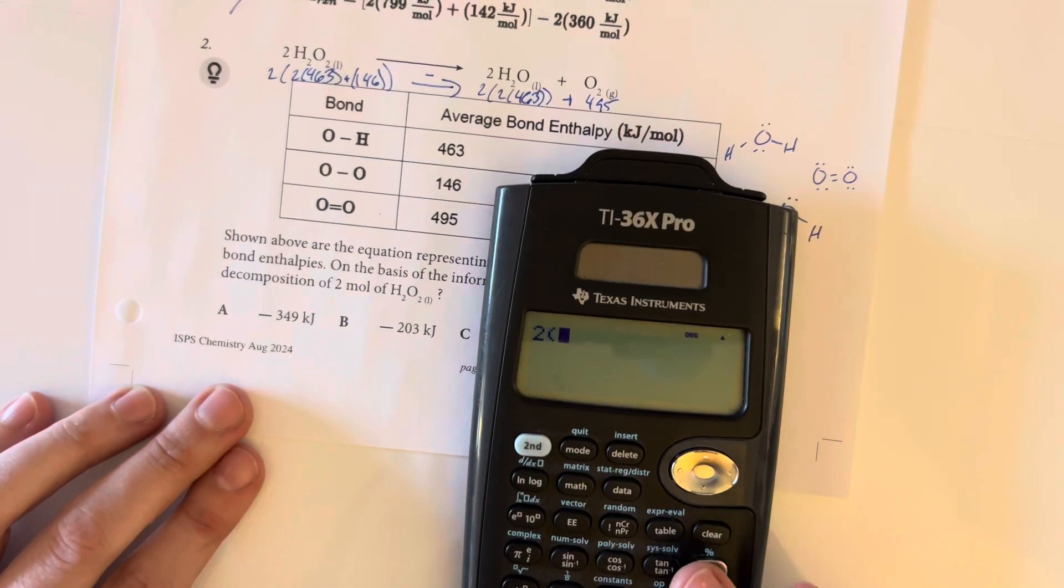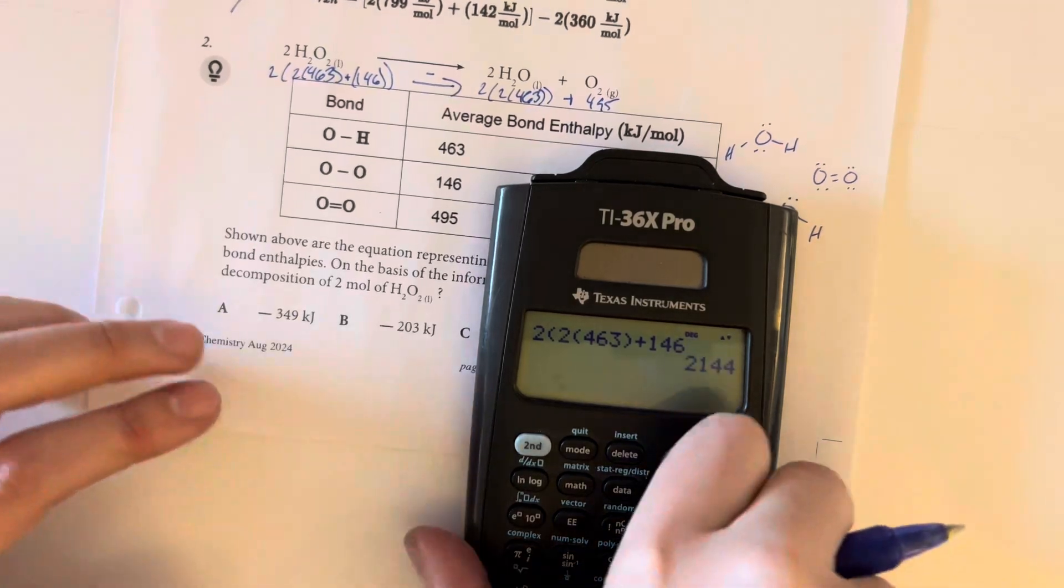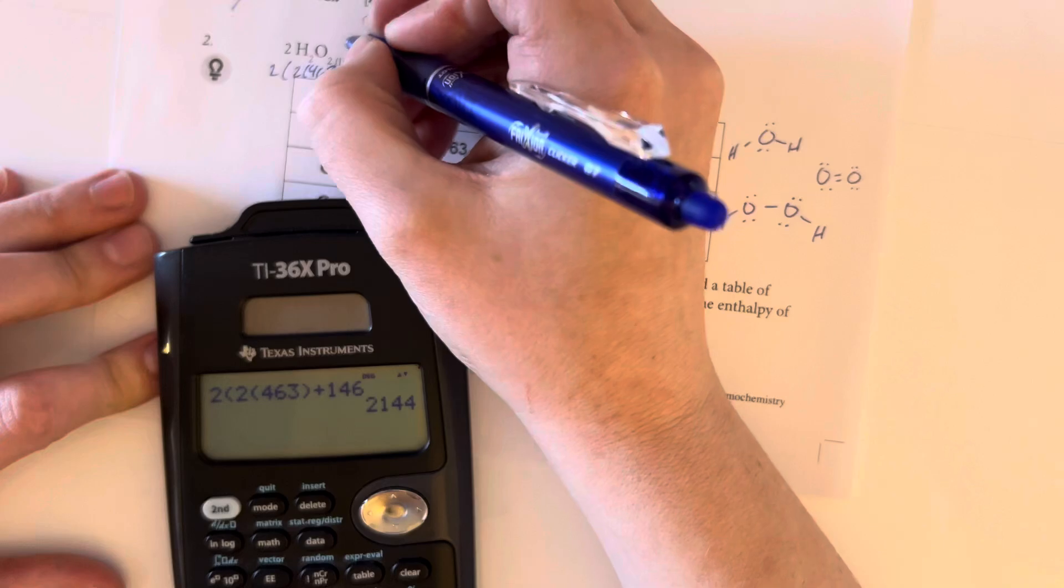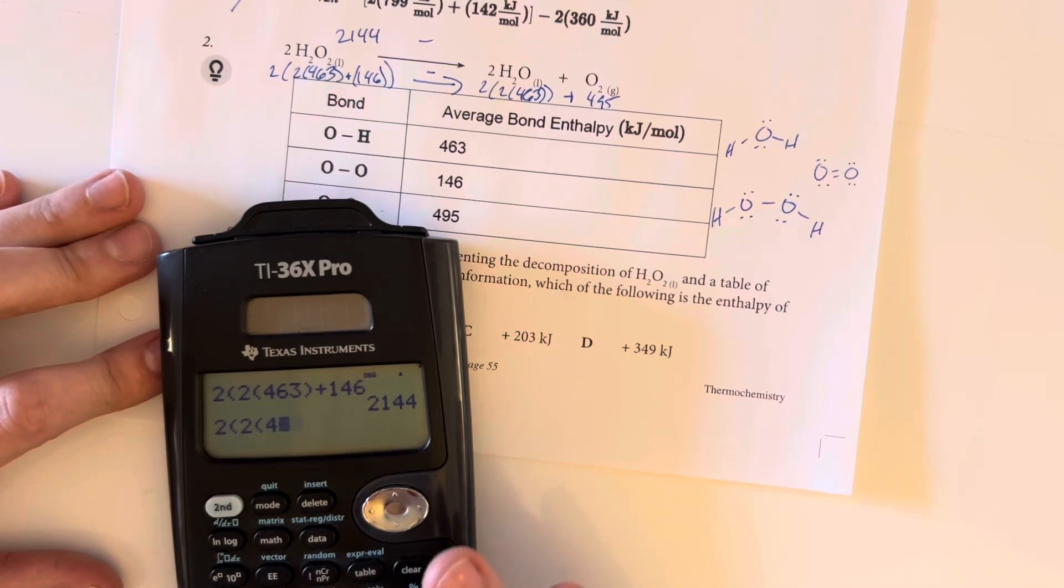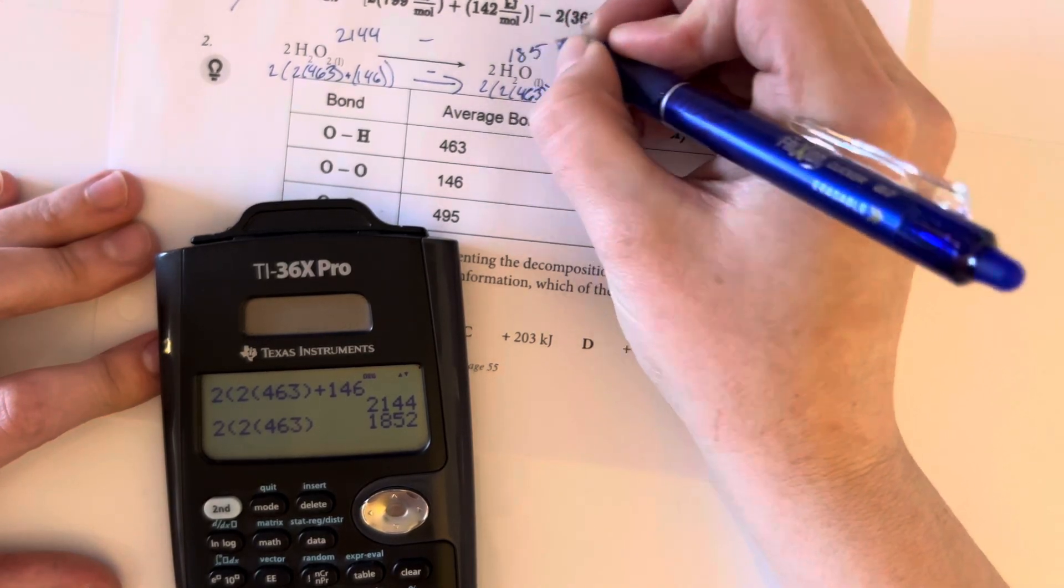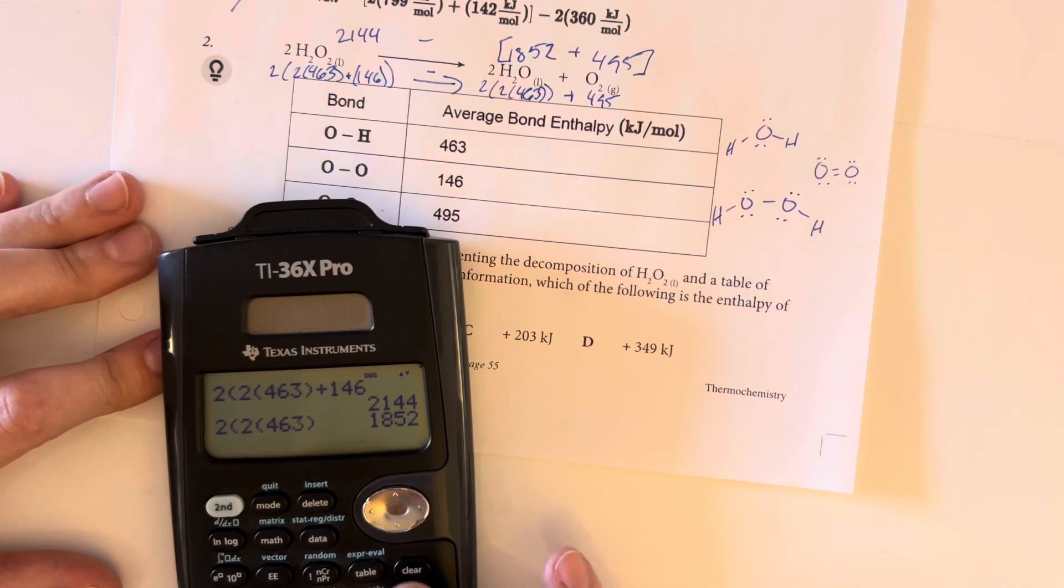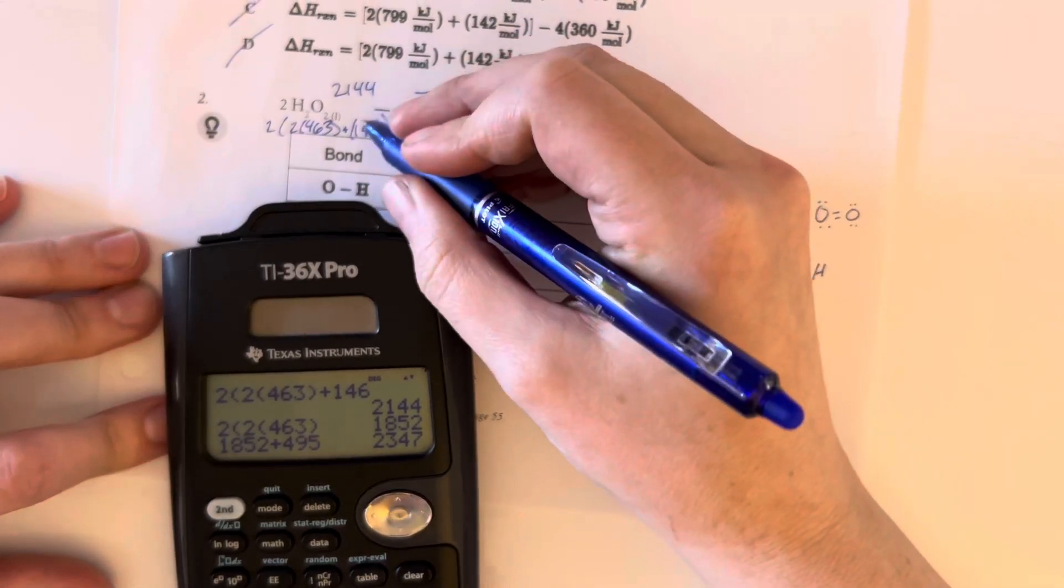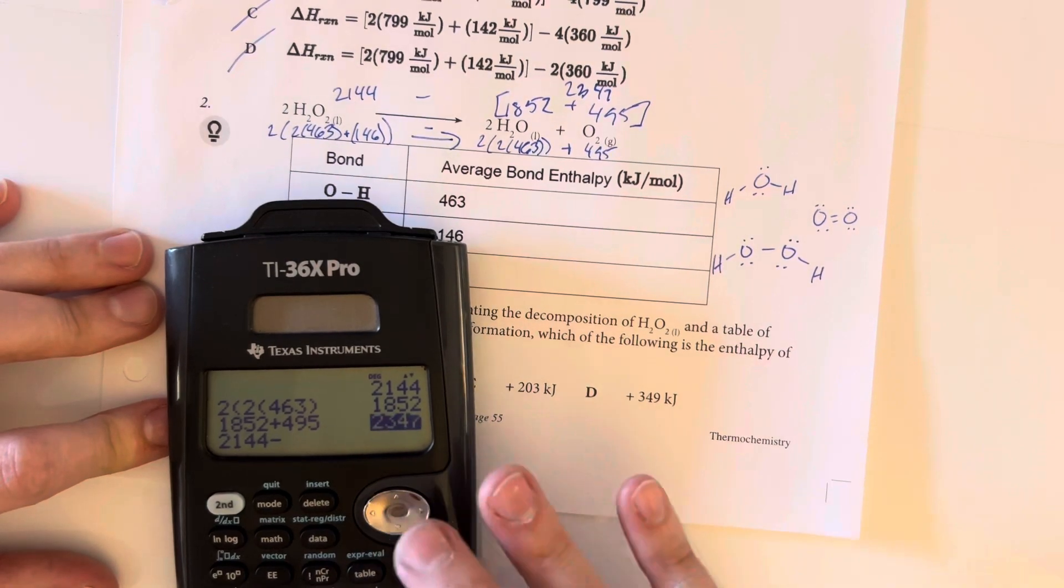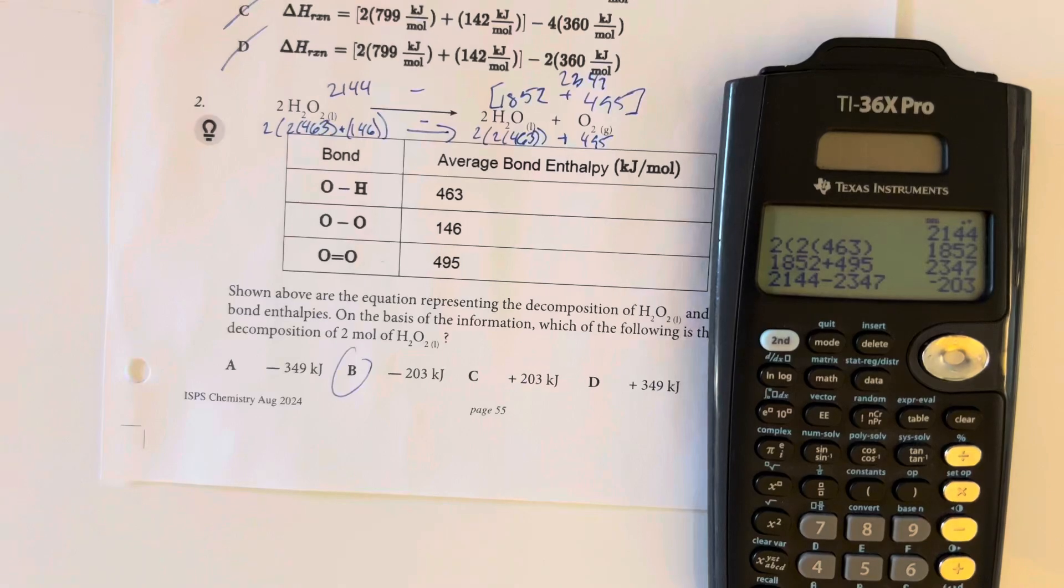We have two times two times 463 plus 146. So this is the amount for my hydrogen peroxide. So 2144. And then minus two times two times 463. 1852 plus the 495. So 1852 plus 495 gives me 2347. So 2144 minus 2347 gives me negative 203 kilojoules. So this is an exothermic reaction.